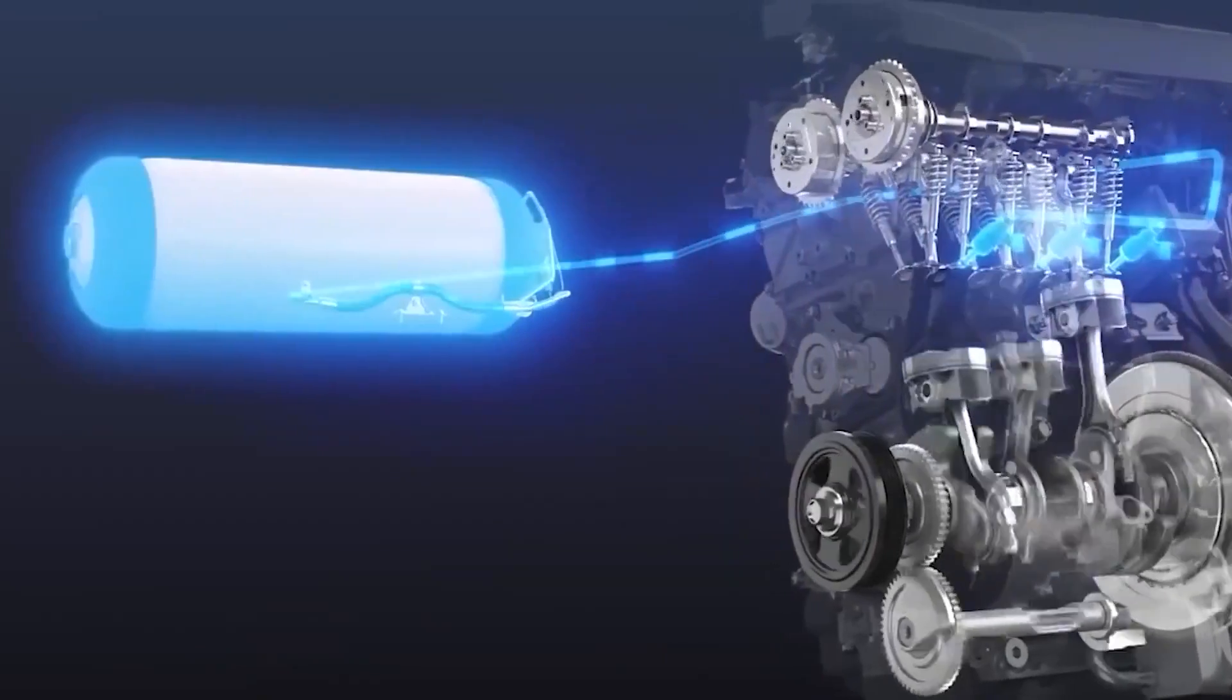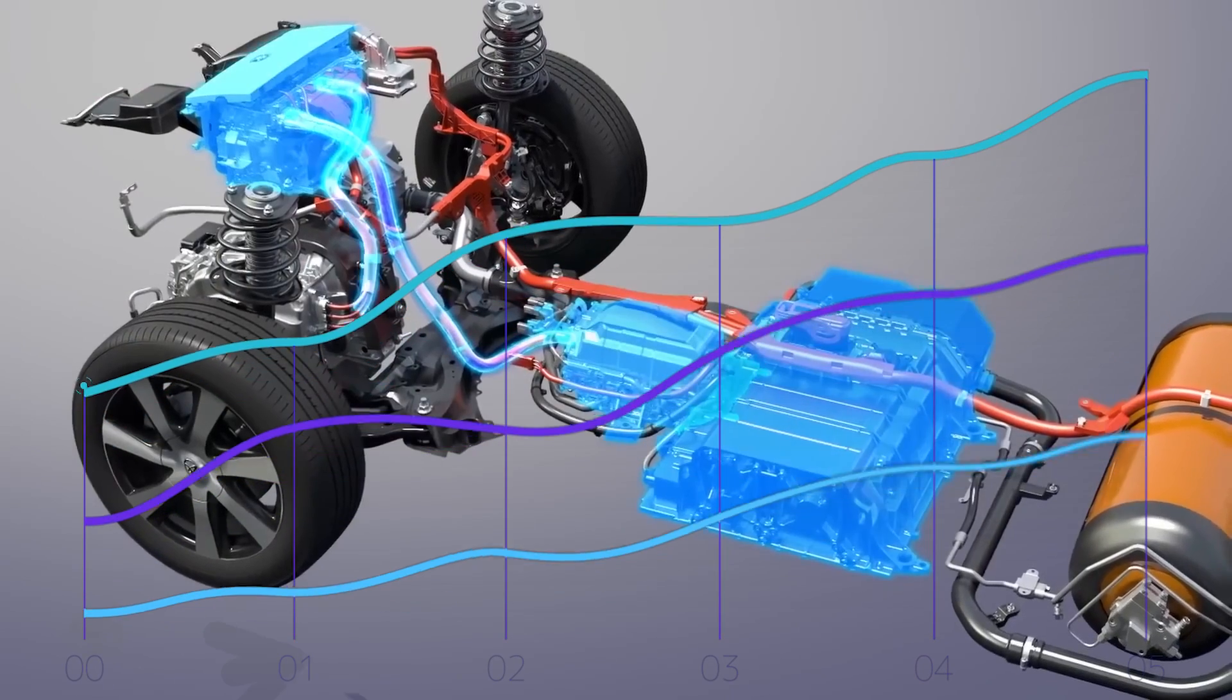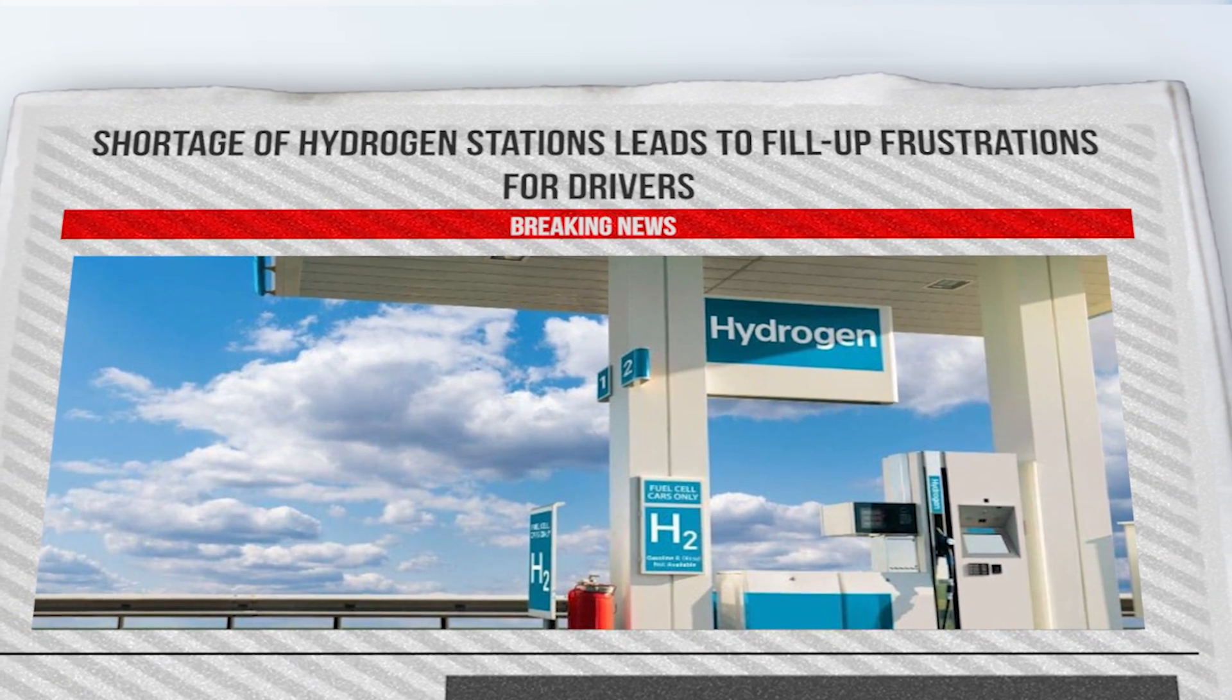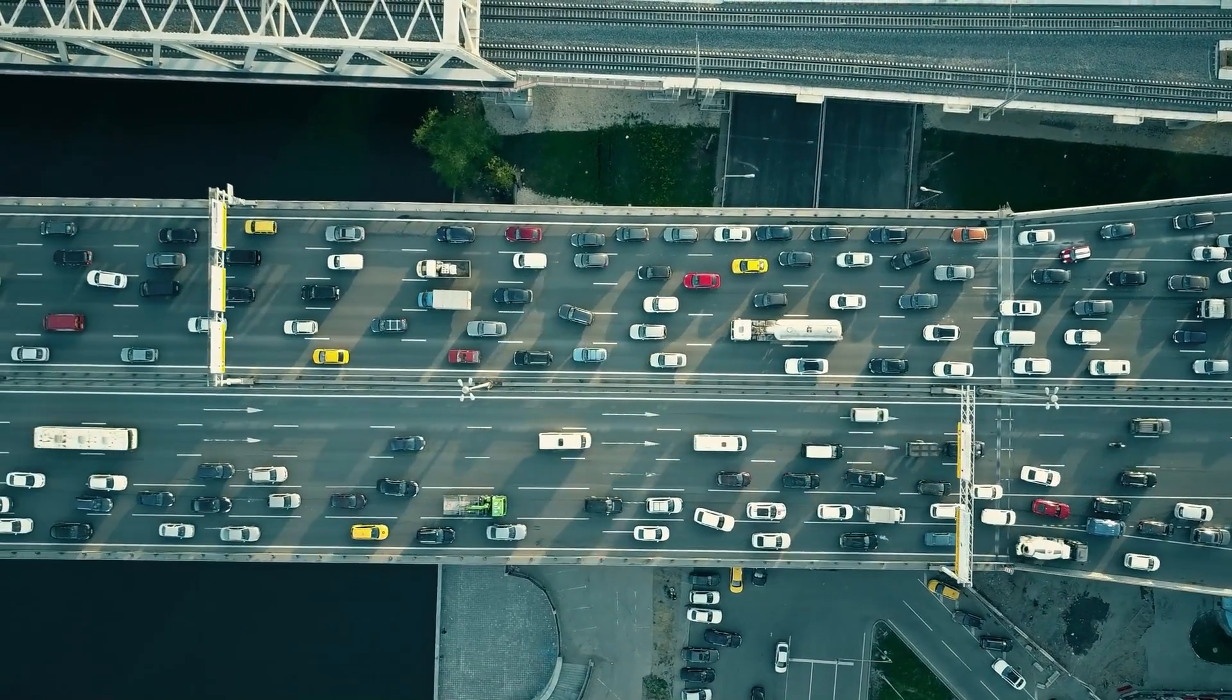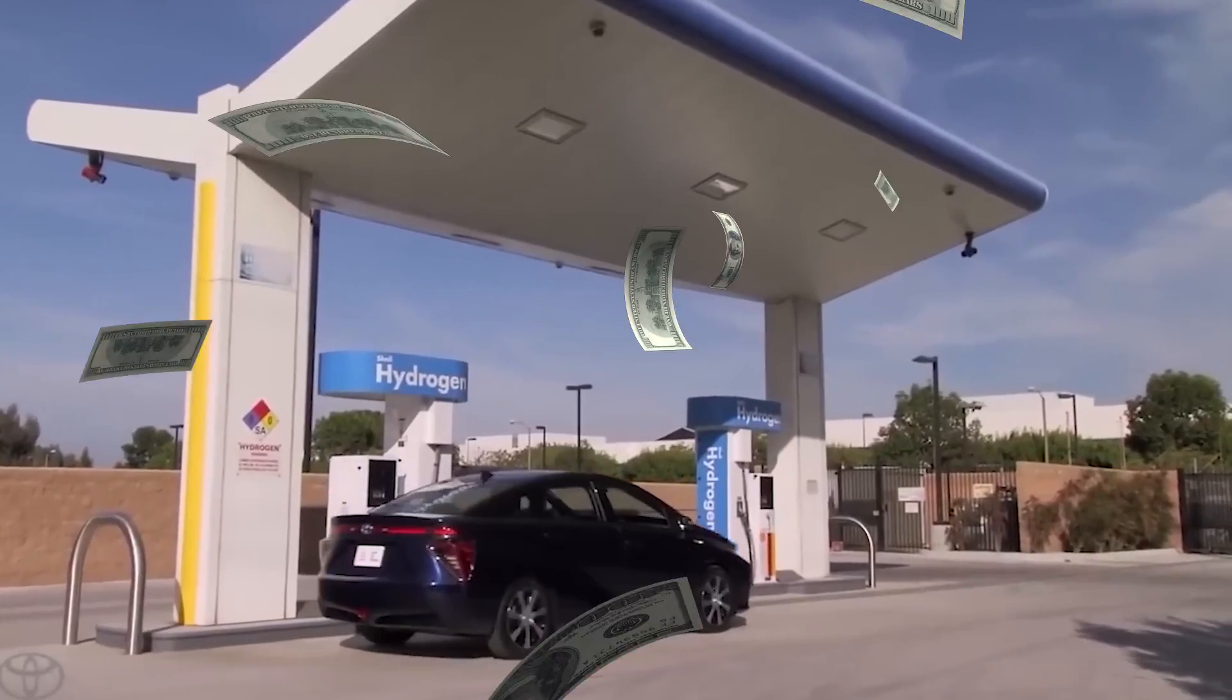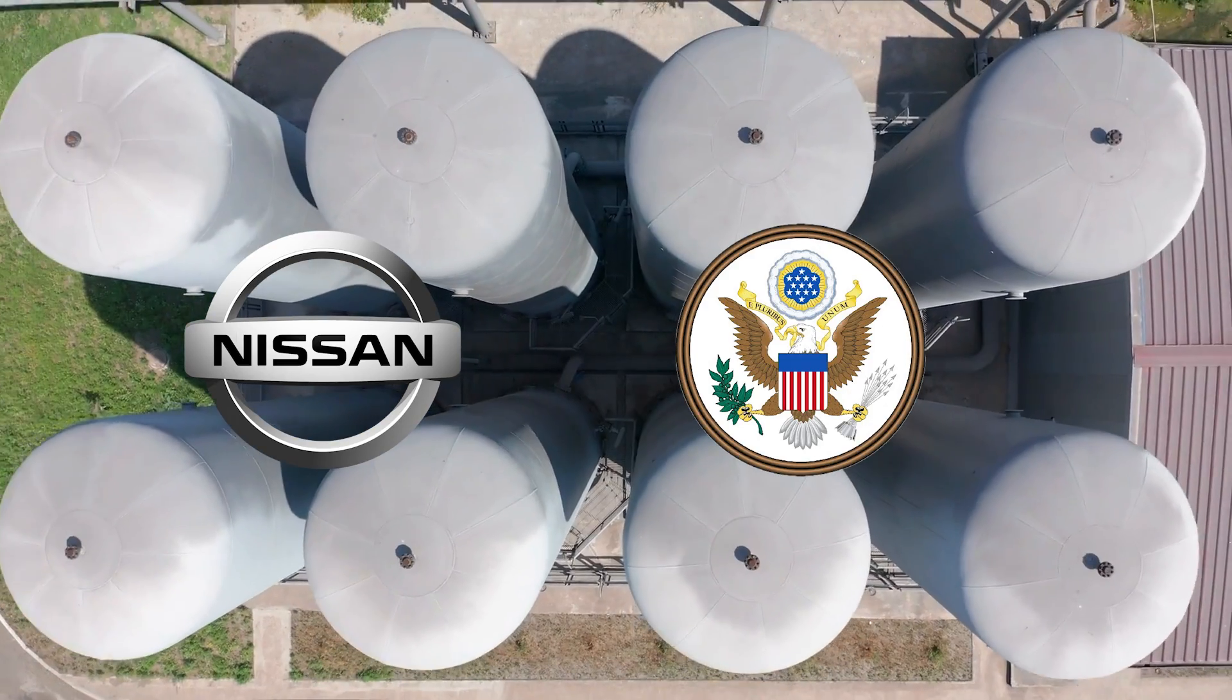While hydrogen fuel cells offer enticing benefits, they also come with challenges that need to be addressed for successful implementation. One primary concern is the lack of hydrogen refueling infrastructure. Currently, the number of hydrogen refueling stations is limited compared to electric charging stations, making it challenging for consumers to adopt FCVs. Expanding the infrastructure requires significant investments and collaboration between automakers, governments, and energy companies.